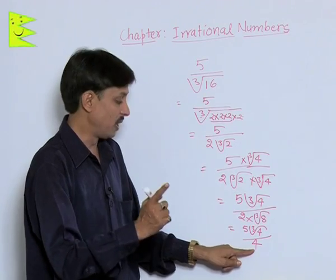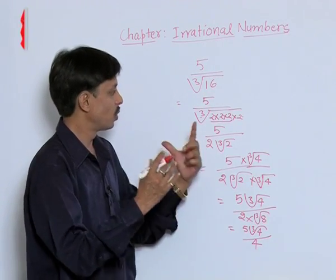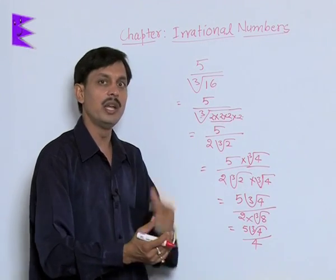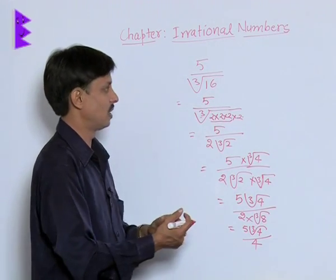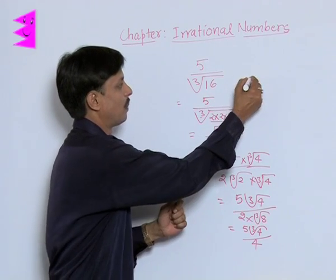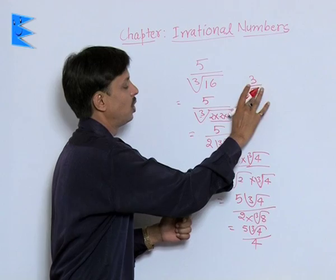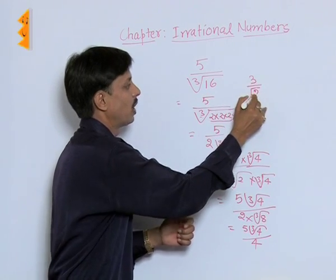Now the denominator is rationalized. Whenever any question is given to rationalize the denominator we need to think for a simplest number. One very easy example, somebody says what is the rationalized form of 3 upon square root of 2.